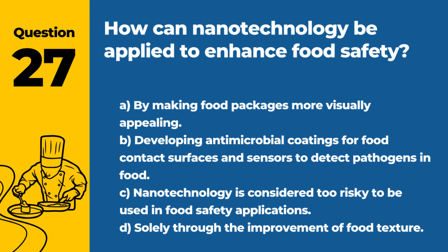Question 27. How can nanotechnology be applied to enhance food safety? a. By making food packages more visually appealing. b. Developing antimicrobial coatings for food contact surfaces and sensors to detect pathogens in food. c. Nanotechnology is considered too risky to be used in food safety. Answer: b. Developing antimicrobial coatings for food contact surfaces and sensors to detect pathogens in food. Nanotechnology offers innovative solutions to enhance food safety.